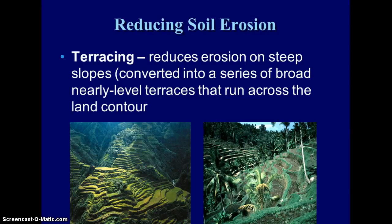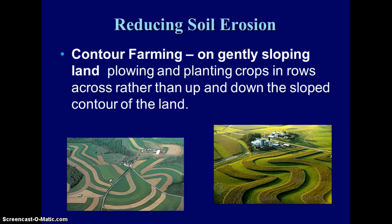Some farming techniques help reduce soil erosion. In areas without flat land, we create flat land by terracing — cutting stair steps into the sides of mountains — because there is less erosion on flat land than on slopes. Contour farming means plowing around the slopes instead of up and down them, which helps prevent runoff and erosion as well.